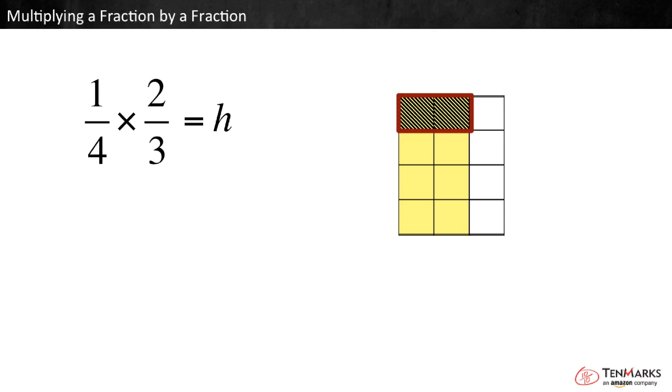But what fraction of the whole is it? Well, the whole has been partitioned into 12 equal parts and 2 of them are shaded, so this is 2/12 of the whole. The product of 1/4 times 2/3 is 2/12.